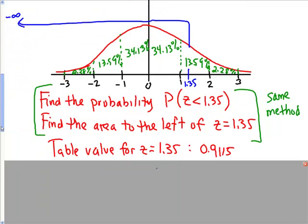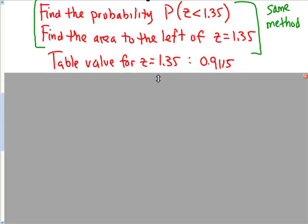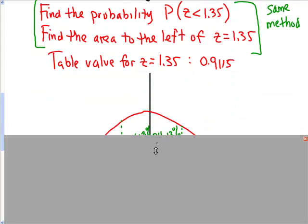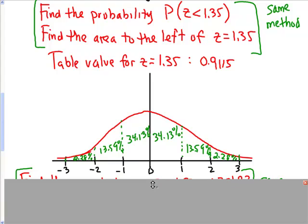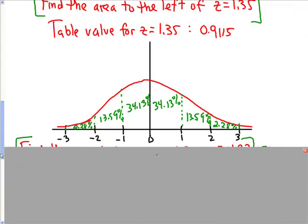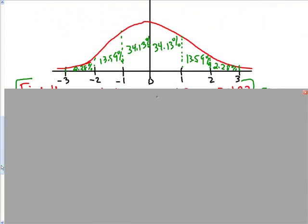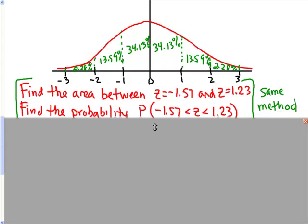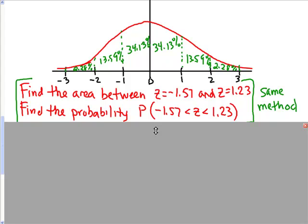The next thing we want to do is something that's a little more difficult for us, requires a little more math. It's not that difficult, but just requires us to do a little more math, is finding the probability or the area between two z scores. So here's my example. Find the area between z equals negative 1.57 and z equals 1.23, and again, that's the same as finding the probability that z will be between those two scores.